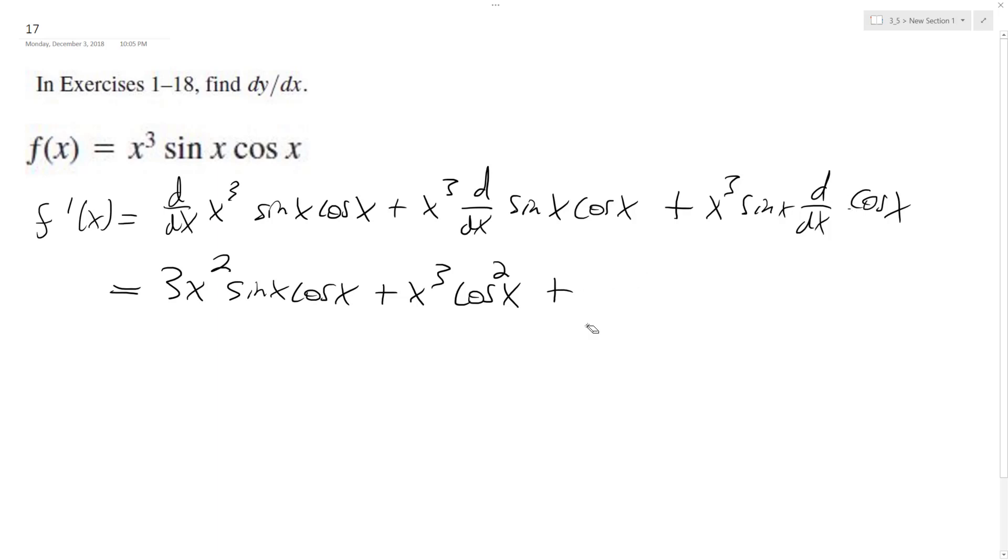So I'm actually going to pull that negative out here. Sorry for taking the shortcut, but minus. And that's from the derivative of the cosine, x cubed, and then sine x times sine x. So it's sine squared x.